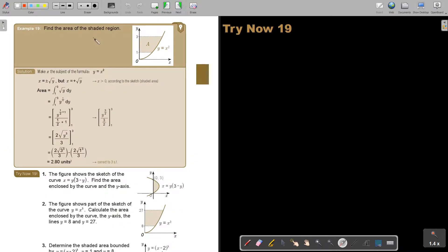Okay, let's look at 1. Find the area of the shaded region. Okay, so first make x the subject of the formula. So it's plus minus y. But x is bigger according to the sketch. Can you see? It's not, otherwise it would have been at the bottom.